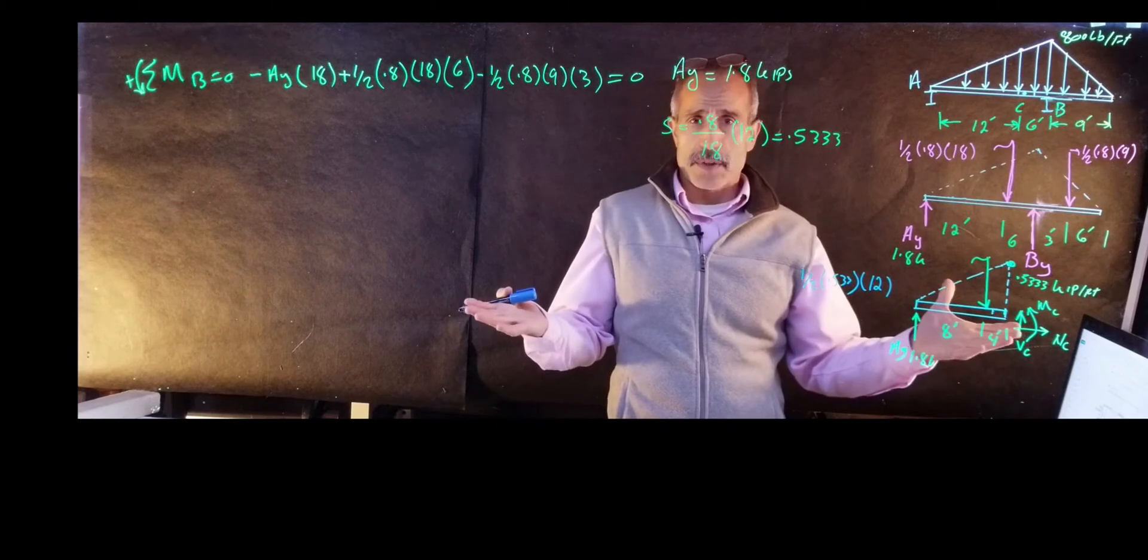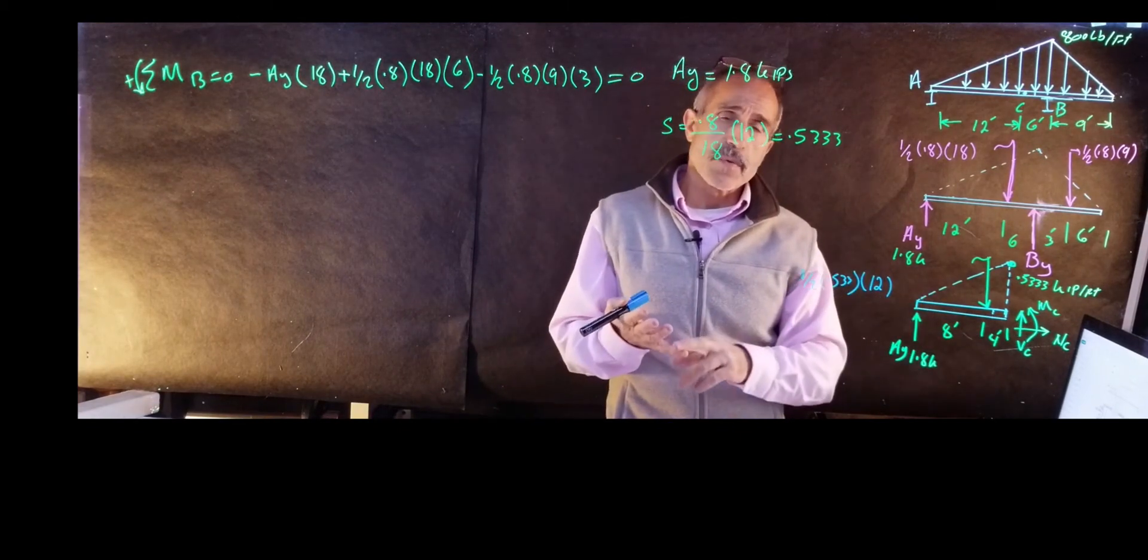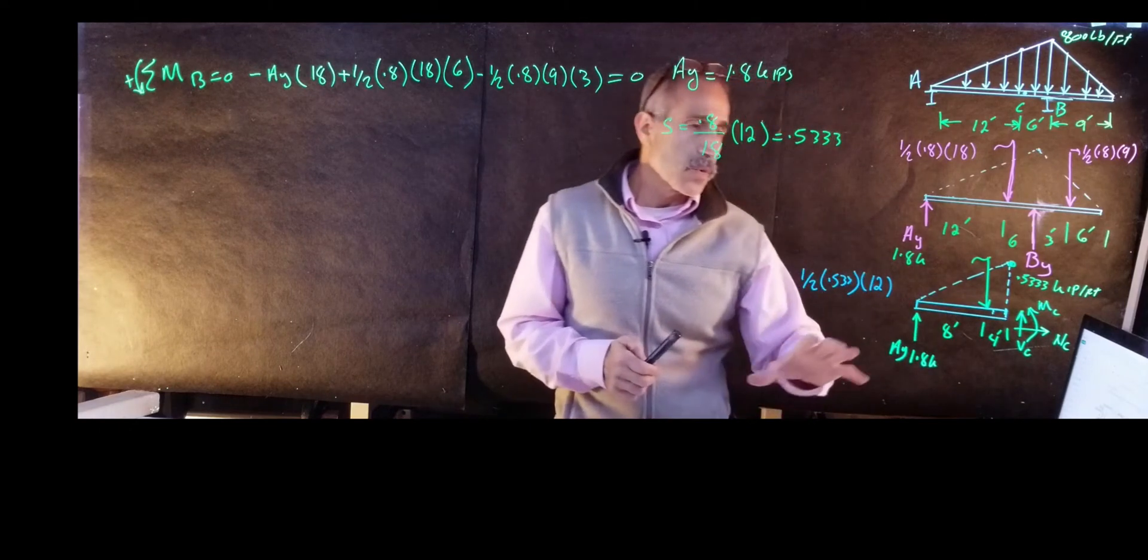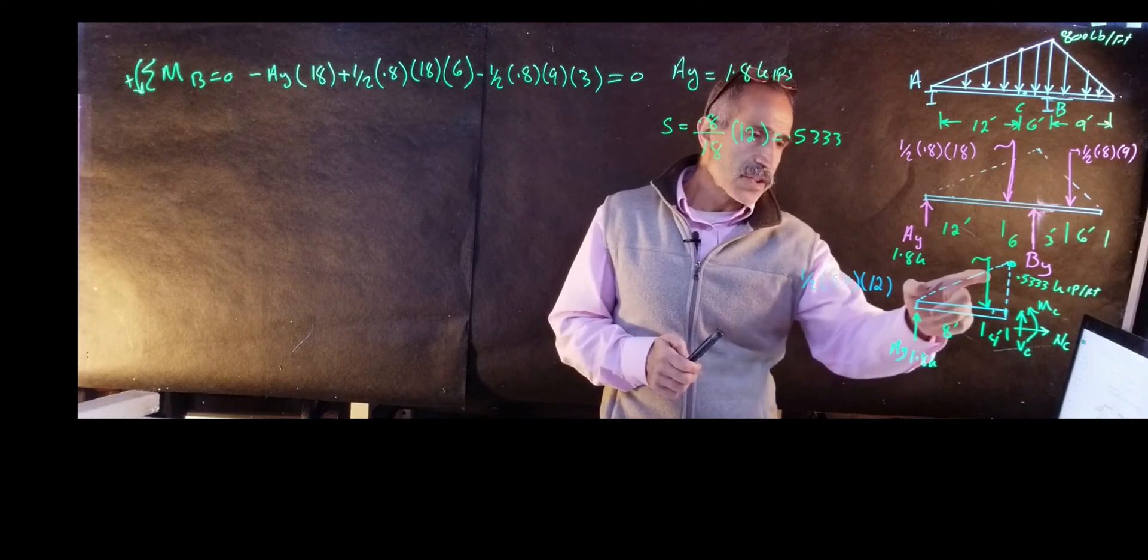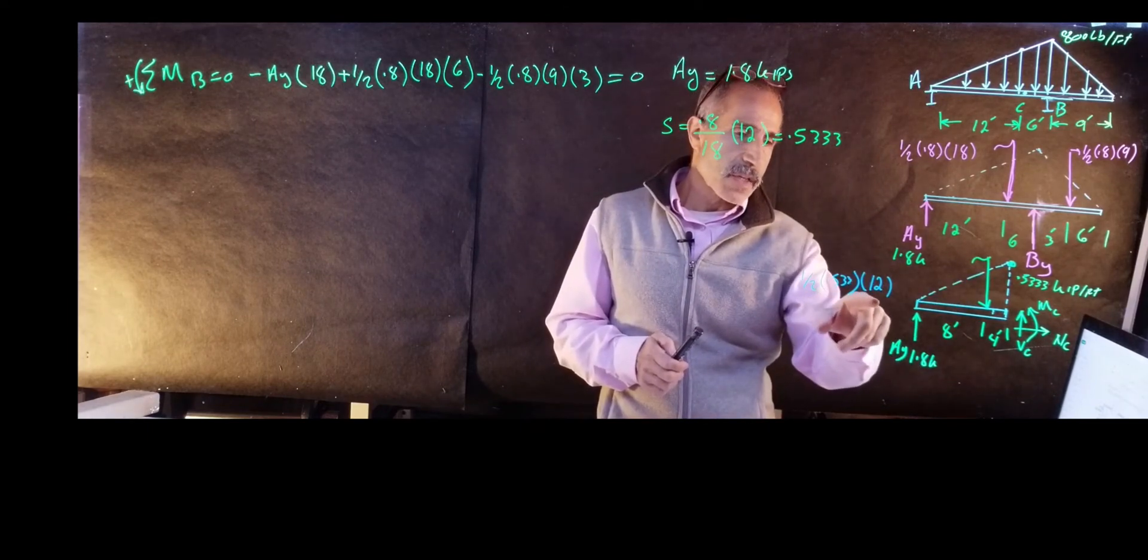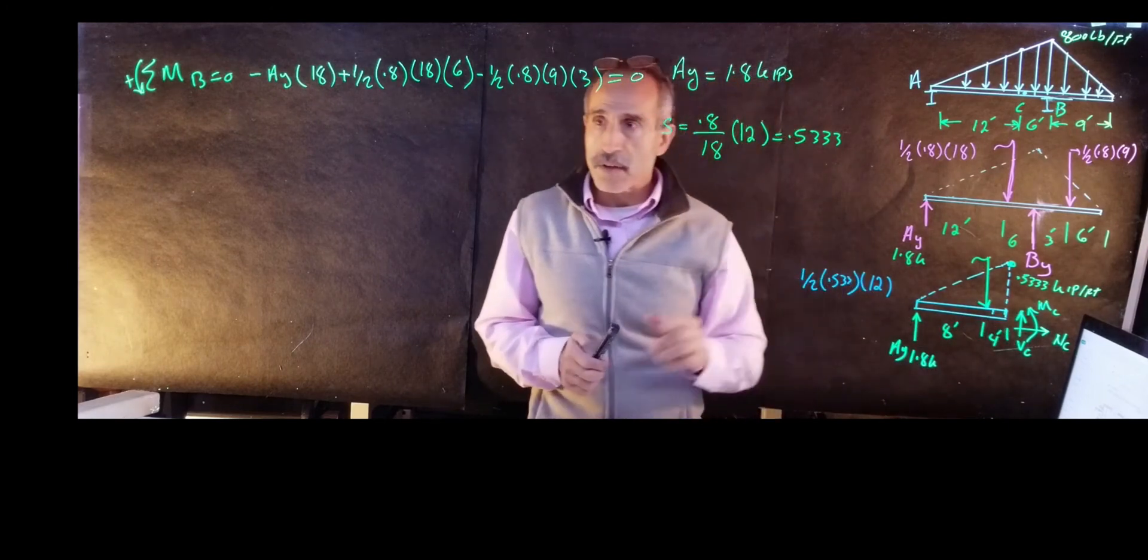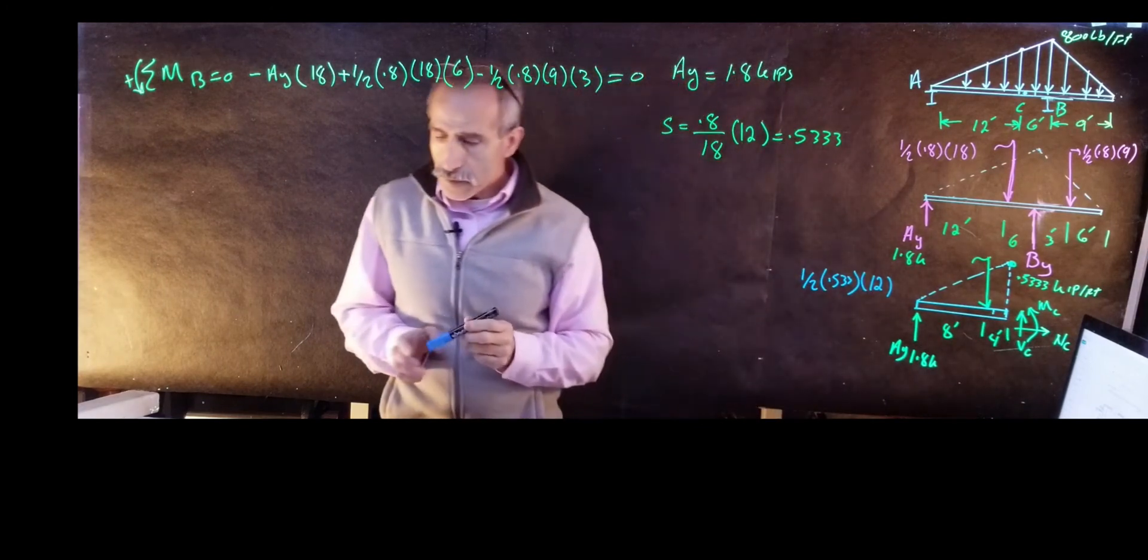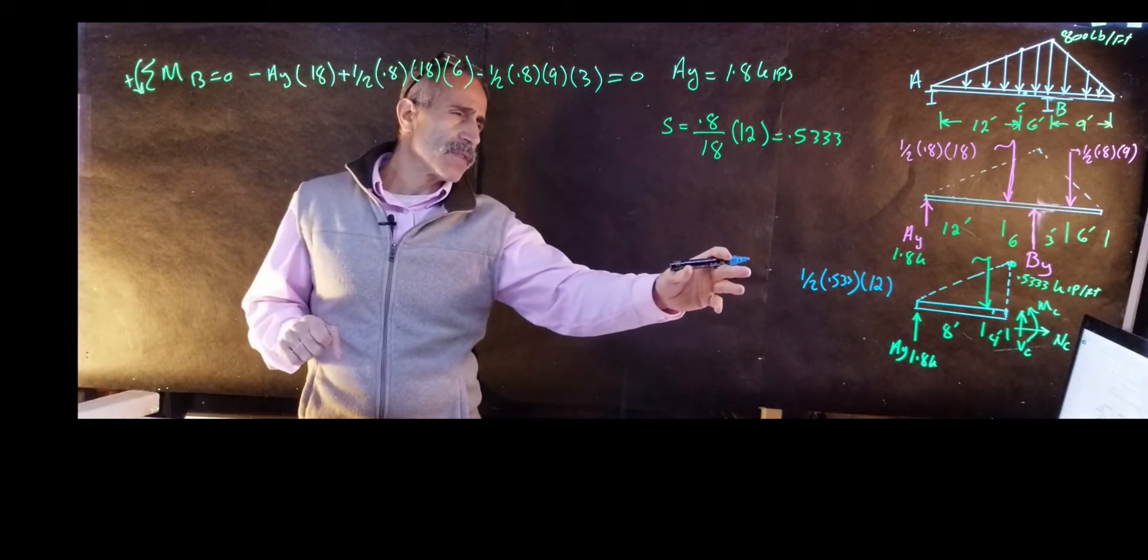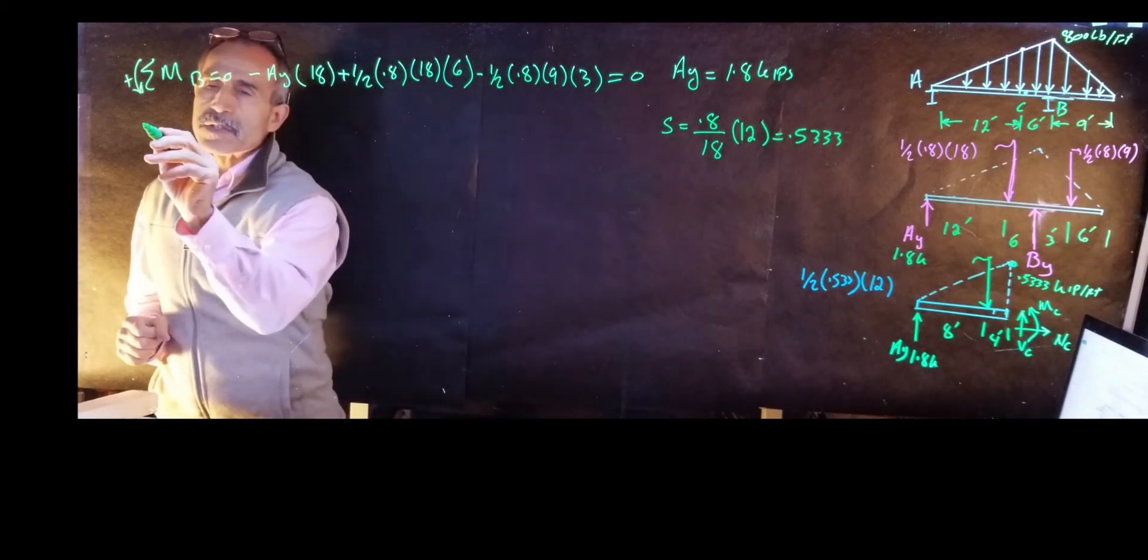Let's calculate what all those three forces come out to. How do we do that? We do equation equilibrium. We do summation of moment, summation Fx, summation Fy, and we can calculate that. So when you look at this free-body diagram, I know this. I just calculated this, one half times 0.533 times 12, and I don't know all these three, but I can find out through the equation.